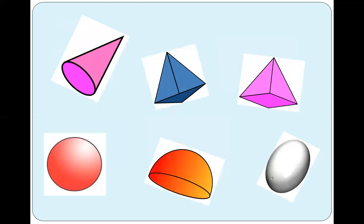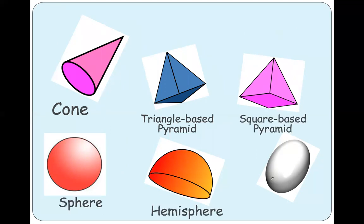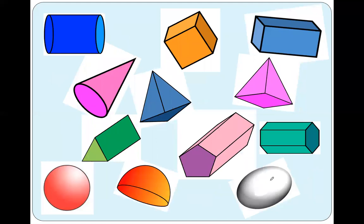These are the non-prism shapes: cone, triangular-based pyramid, square-based pyramid, sphere, hemisphere, and ellipsoid. Here you have a variety of shapes — I'd like you to find the names and identify which ones are prisms and which ones are not. Remember, prisms have the same cross-section area, and that is the key feature that makes them called prisms. It's important to identify the cross-section area because you are going to need it to find the volume of a prism.